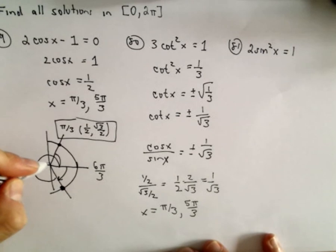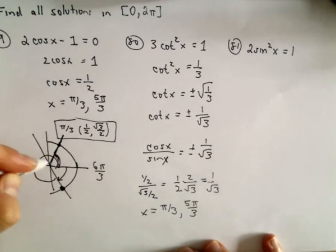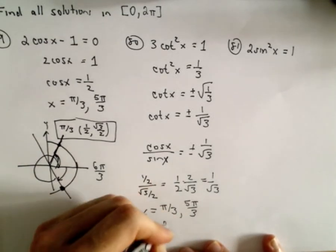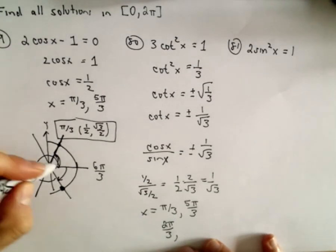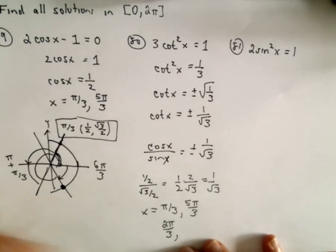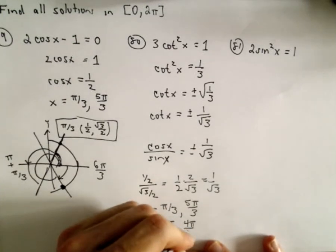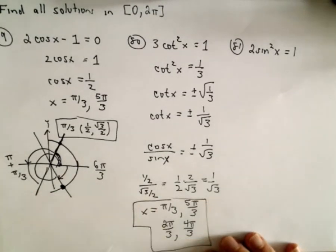We can also have negative solutions. If we take this angle and reflect it about the y-axis, that corresponds to the angle 2 pi over 3. And likewise down in the third quadrant — going halfway around the unit circle is pi, and adding another pi over 3 gives us 4 pi over 3. So there are four solutions total.